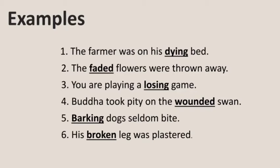In the next example: 'Buddha took pity on the wounded swan' — the word 'wounded' acts partly as a verb and partly as an adjective, following the noun 'swan,' so 'wounded' is also a participle. Example 5: 'Barking dogs seldom bite' — 'barking' acts as partly a verb and partly an adjective, telling us what the dog is doing, and follows the noun 'dogs.' Example 6: 'His broken leg was plastered' — 'broken' acts partly as a verb and partly as an adjective, telling us about the noun 'leg,' so 'broken' is a participle.